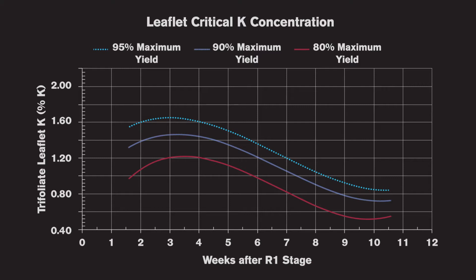The idea behind that is that as our crop grows and matures, we increase biomass and we typically decrease our tissue K concentrations. It's really a dilution effect — as we put on more biomass, we dilute the amount of K that's actually in the tissue. So we now have this dynamic relationship where we understand that tissue K is going to drop over time as the crop matures and progresses.